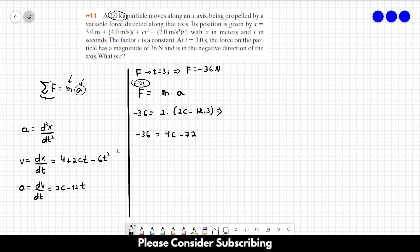So sending 72 to the other side, we have 36 is equal to 4c. That means that c is equal to 9.